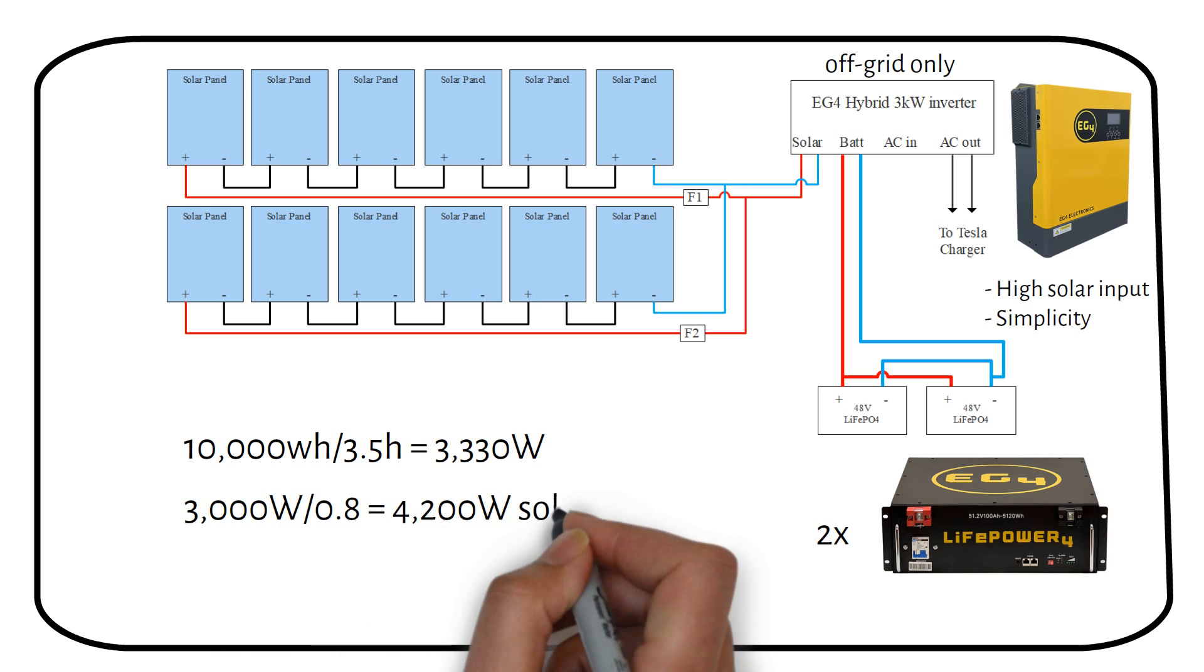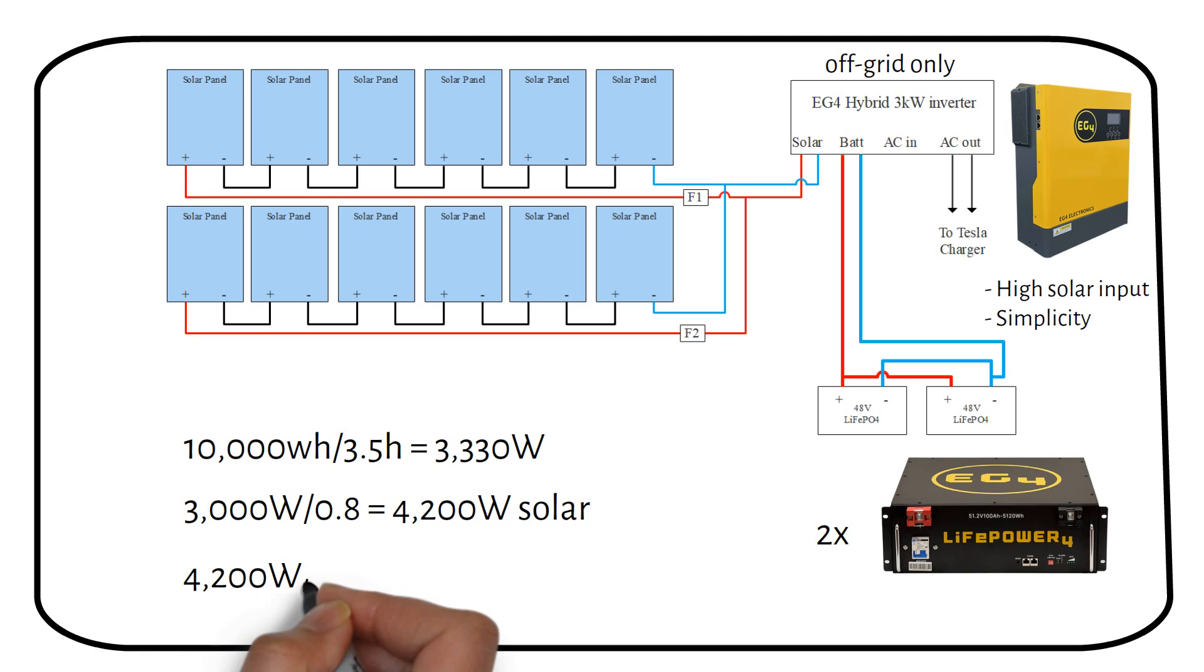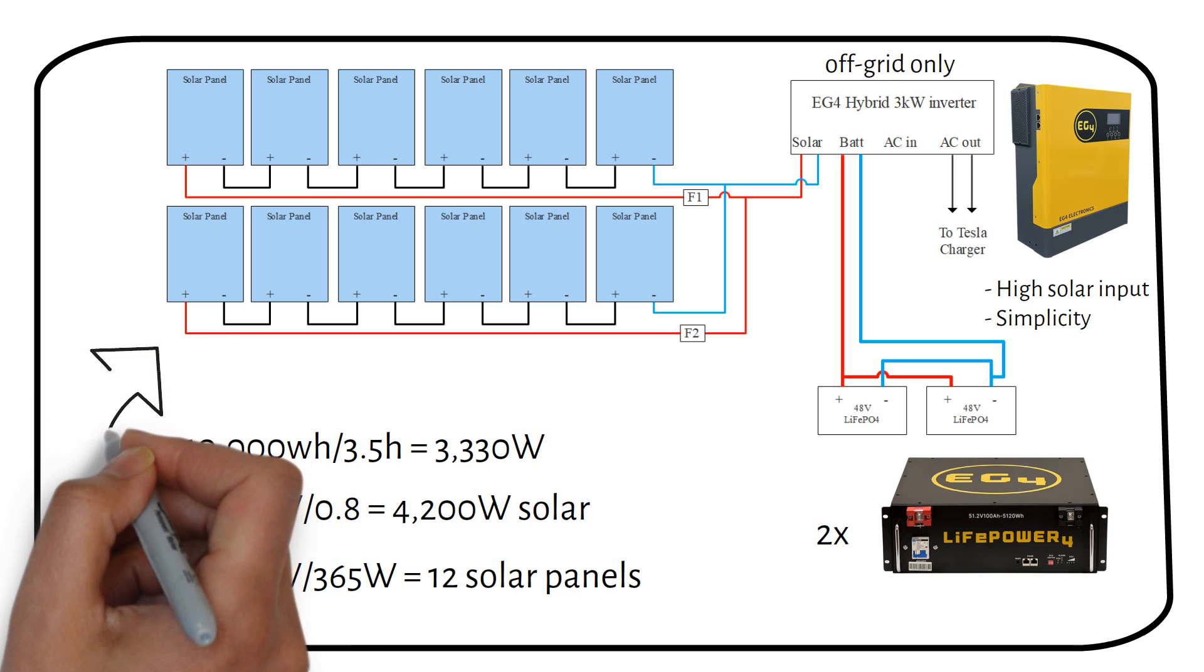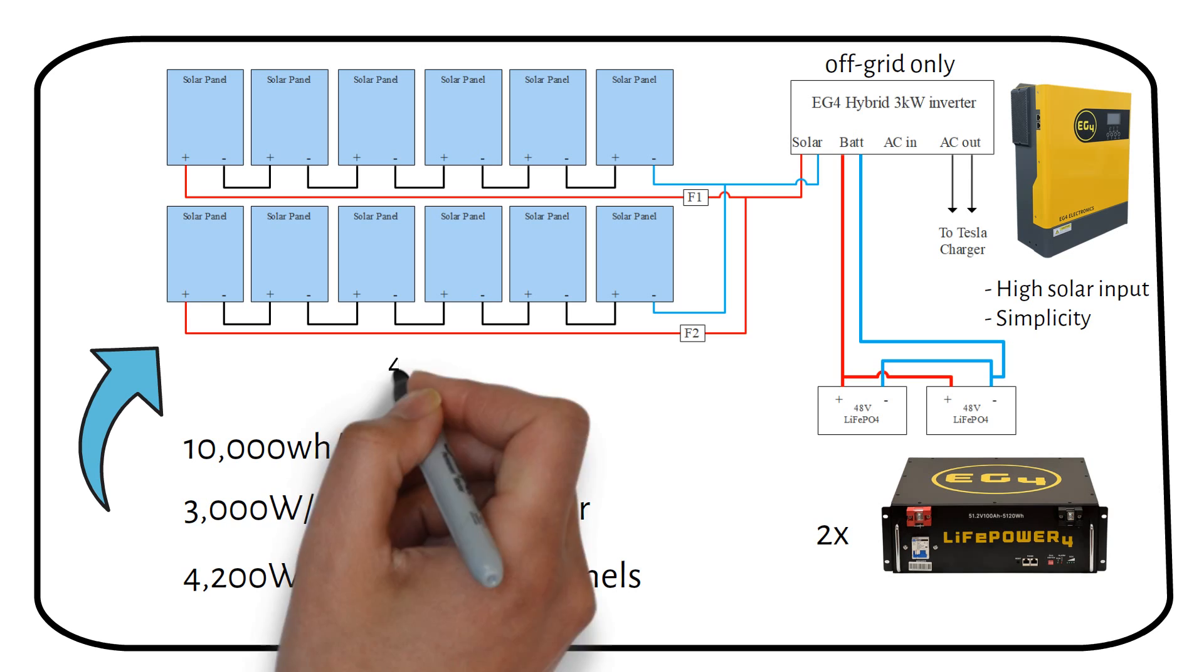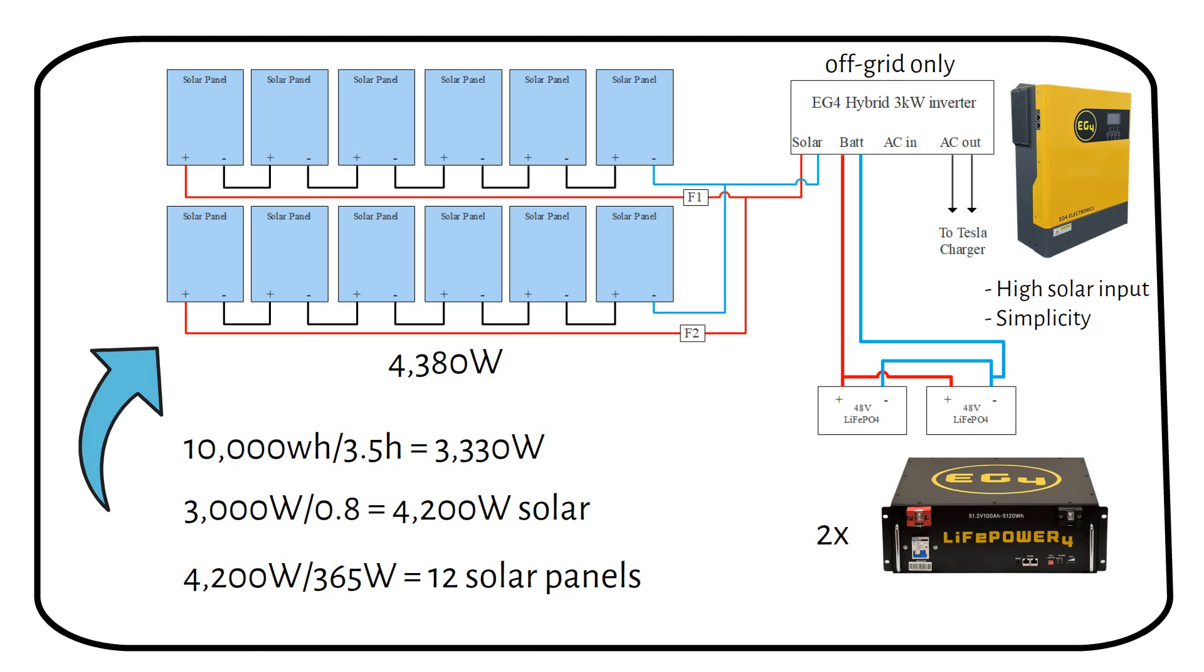We get a total of 4,200 watts of solar panels. If we use 365-watt solar panels from Sand and Solar, we need 12 solar panels. We have to wire in a 6S2P configuration in order to limit the input voltage to 500 volts. That means we will wire 6 panels in series and then parallel with the other set, for a total of 12 panels at 4,380 watts. We also need inline MC4 fuses and Y branch connectors.